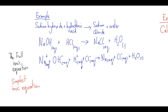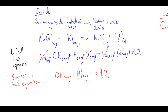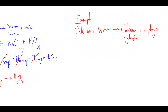We can simplify this. To write the simplest ionic equation, you cancel out ions that appear on both sides of the arrow. There's a sodium ion on each side — they cancel. There's a chloride ion on each side — they cancel. What we're left with is called the simplest ionic equation or net ionic equation: OH− + H+ → H₂O(l).